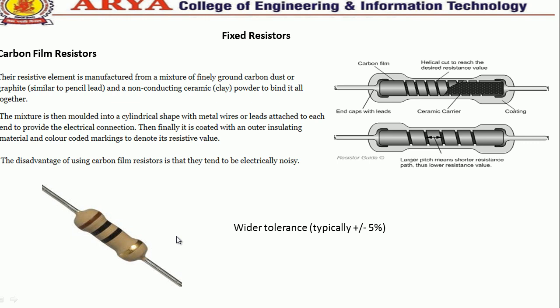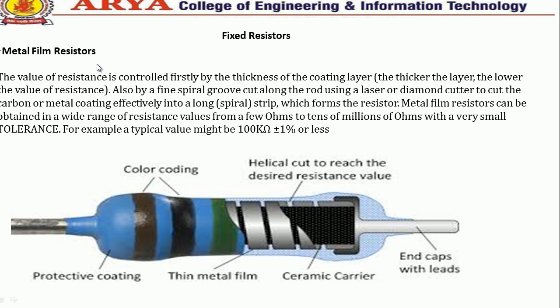Another type of fixed resistor is the metal film resistor. The value of resistance is controlled firstly by the thickness of the coating and length, and also by a fine spiral groove cut using a laser or diamond cutter, cutting the carbon or metal coating into a long strip which forms the resistor.